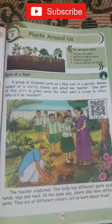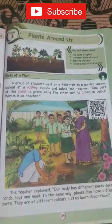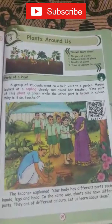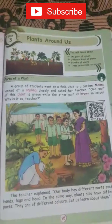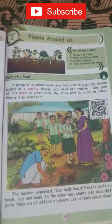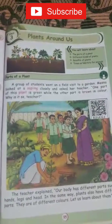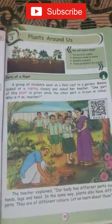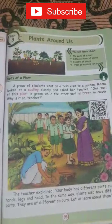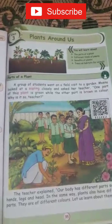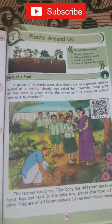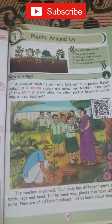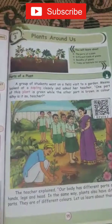In this lesson, we are going to learn about the different kinds of plants. That is, what are the types of plants? There are tall, short, herb, shrubs, climbers, and creepers. There are many types of plants.